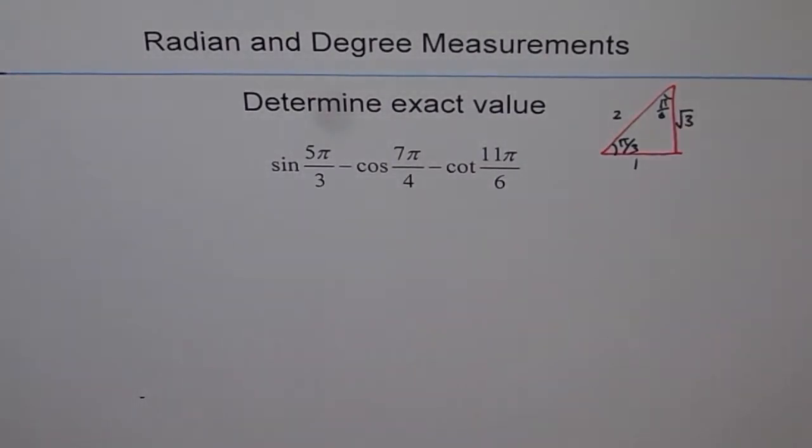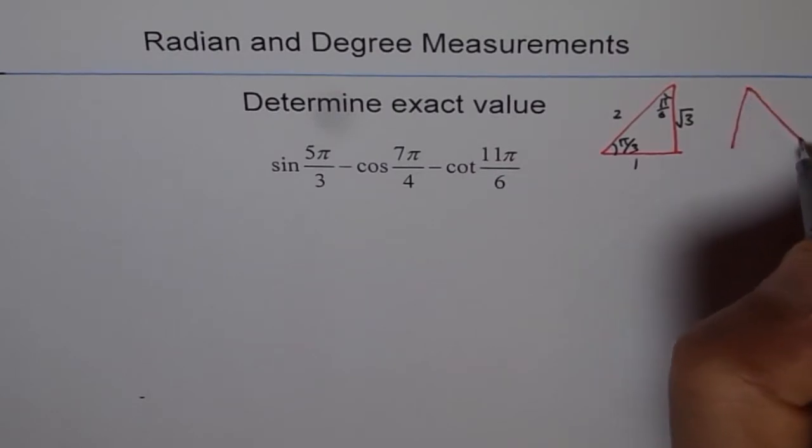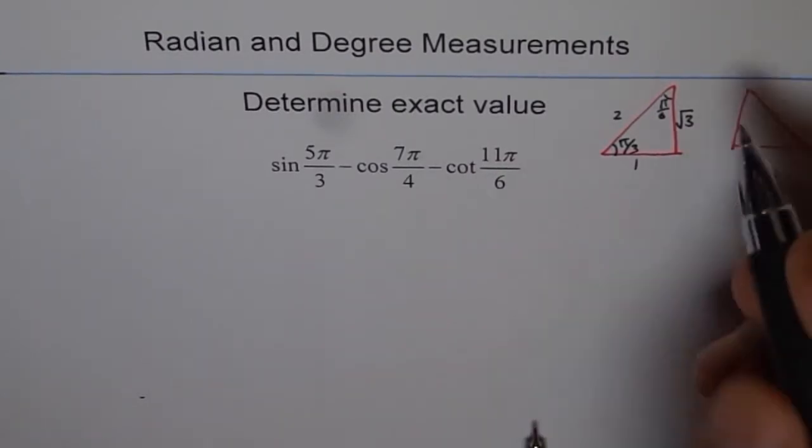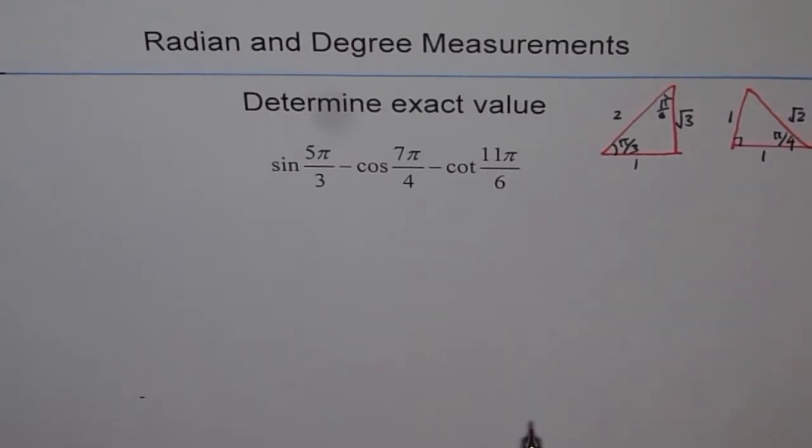The other one is π/4 or 45 degrees. So that one is here, which is 1, 1, and square root 2. And the angle here is π/4. So we have our special triangles.